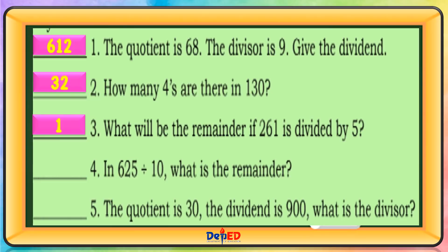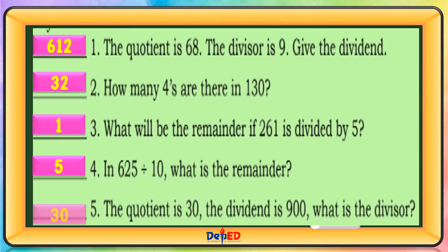In 625 divided by 10, what is the remainder? The answer is 5. The quotient is 30, the dividend is 900. What is the divisor? The answer is 30.